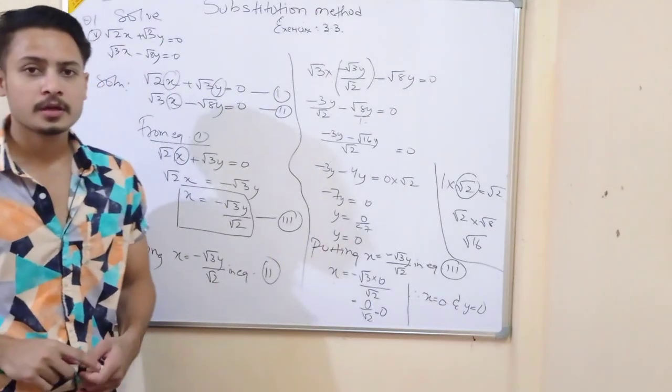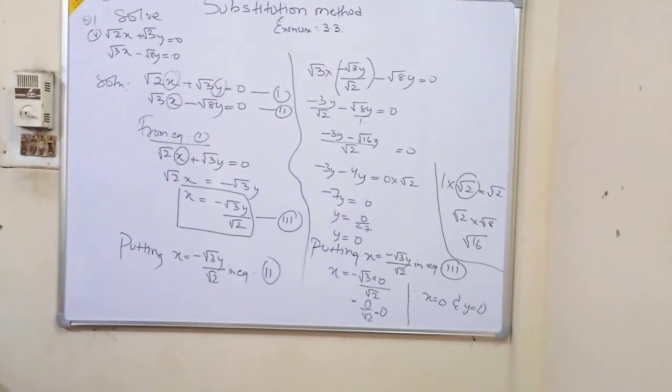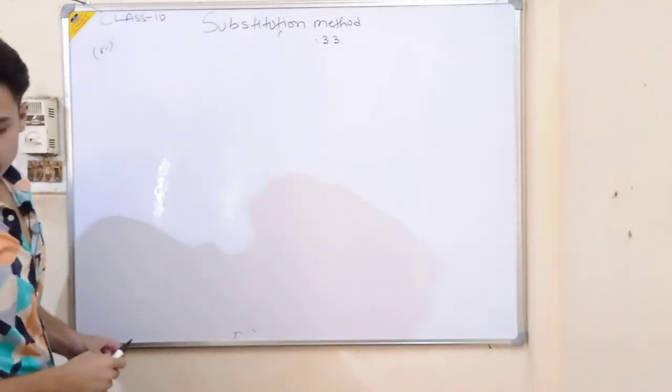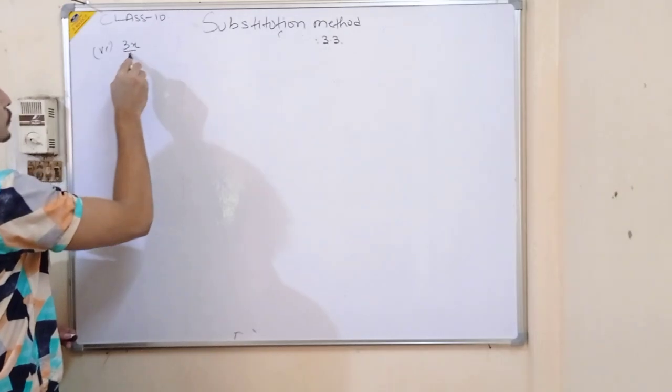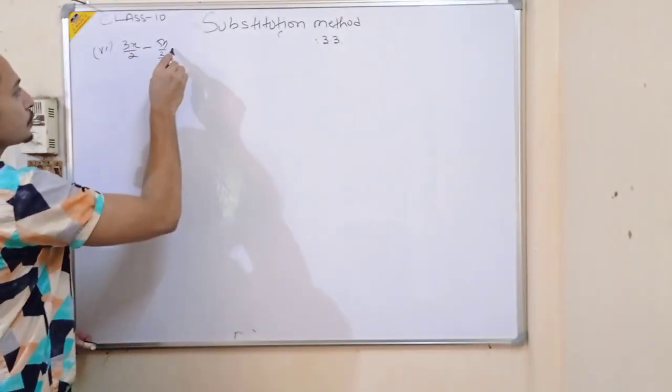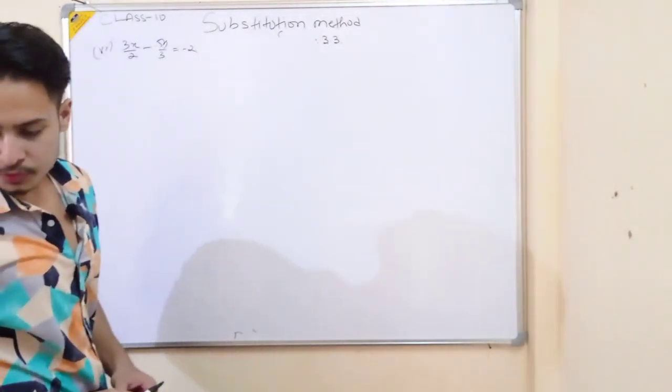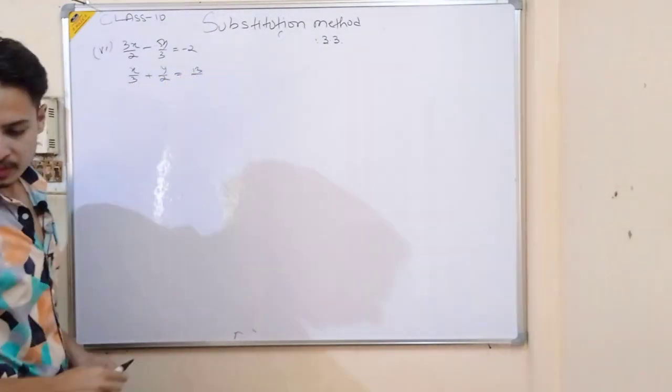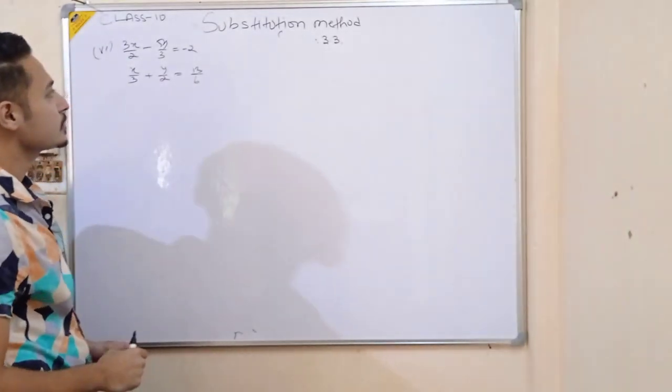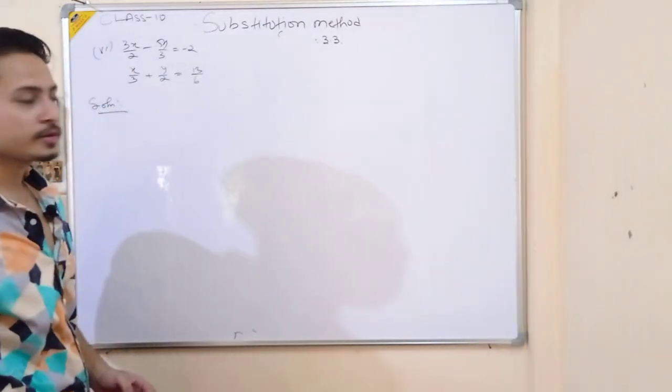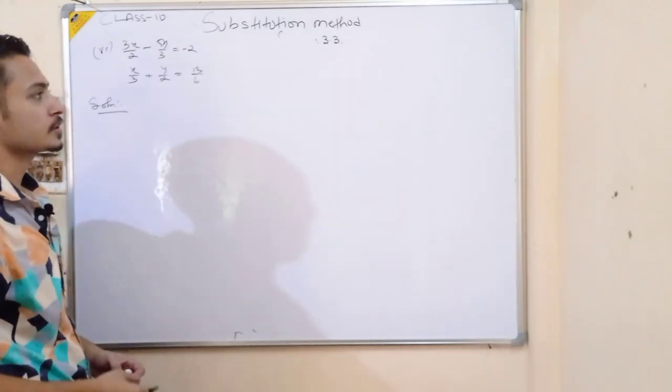Now one more question. We'll solve one more question, okay? Let's take the last question, question number 6. The fraction is 3x by 2 minus 5y by 3 is equal to minus 2, and then we have x by 3 plus y by 2 is equal to 13 by 6. Now we have a fraction type question. First simplify, then start the substitution method.